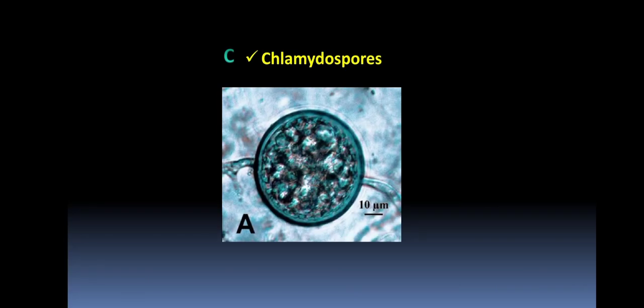Chlamydospores are intercalary asexual spores produced due to the thickening of the cell wall of an intercalary cell in the hyphae. The cell in the middle of the hyphae thickens and becomes a resting spore called a chlamydospore. So there are three types of asexual spores: zoospores formed at lower temperatures (10–18°C), conidiosporangia formed at high temperatures (above 18°C), and chlamydospores which are resting intercalary spores.